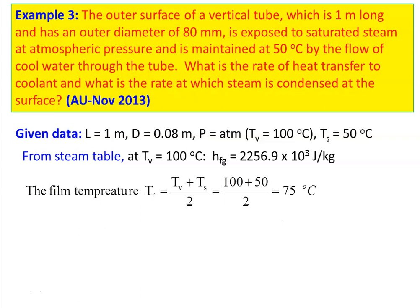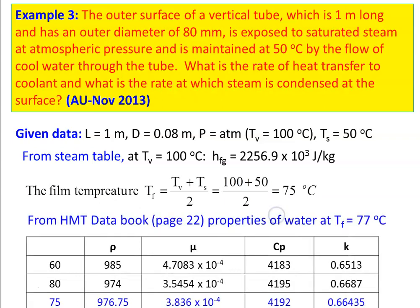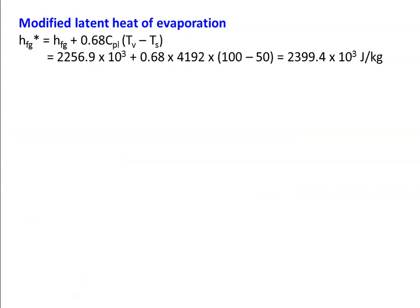The film temperature is (100 + 50) / 2 = 75°C. Properties at 75°C are obtained by interpolation between 60°C and 80°C values from the data book: ρ = 976.75 kg/m³, μ = 3.836 × 10⁻⁴ N·s/m², CPL = 4192 J/kg·K, and K = 0.66435 W/m·K. The modified latent heat of evaporation: HFG* = 2256.9 × 10³ + 0.68 × CPL × (Tv − Ts) = 2399.4 × 10³ J/kg.